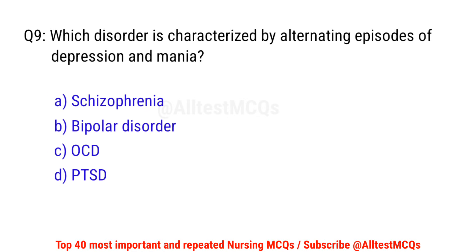Question No. 9: Which disorder is characterized by alternating episodes of depression and mania? The right option is B: Bipolar disorder.